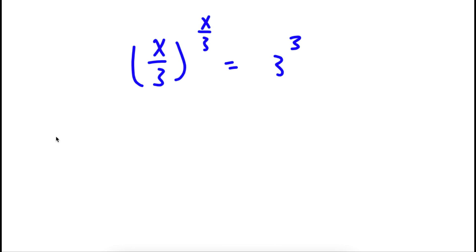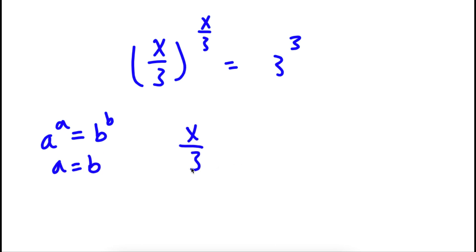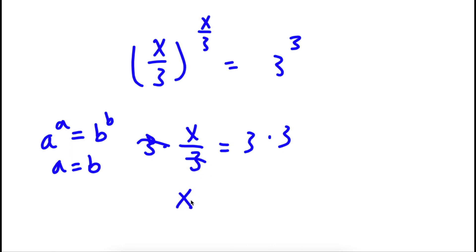Now, if I have something in the form a to the power of a is equal to b to the power of b, this means that a is equal to b. So in this case, x over 3 is equal to 3. Now I have a simple equation — all I have to do is multiply both sides by 3. These two cancel out and I'm left with x is equal to 3 times 3, which is 9.